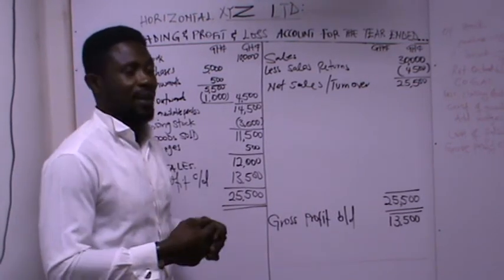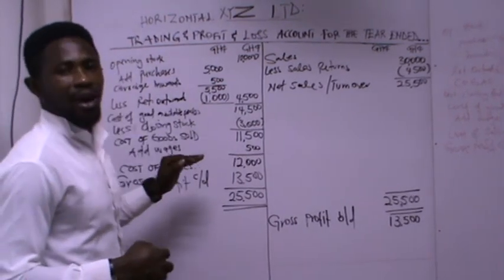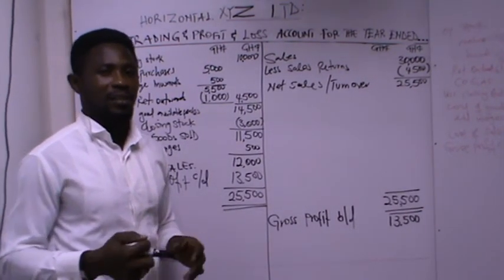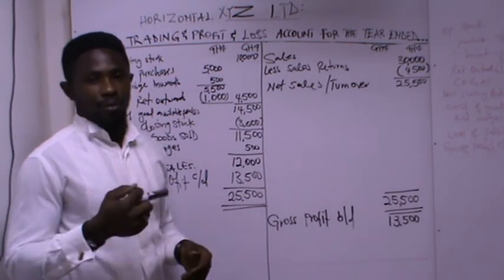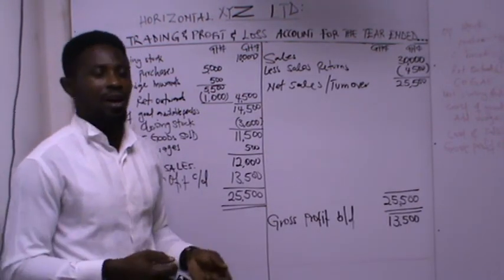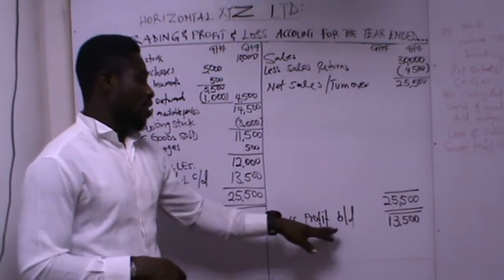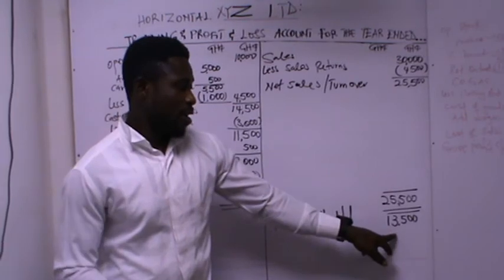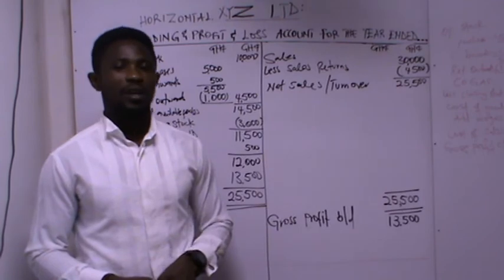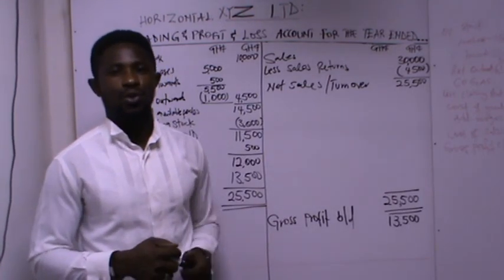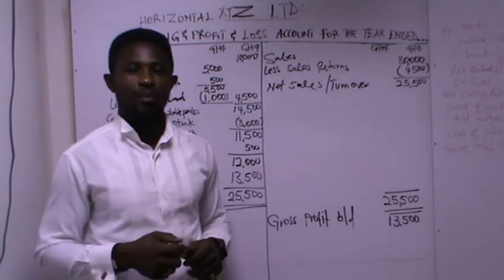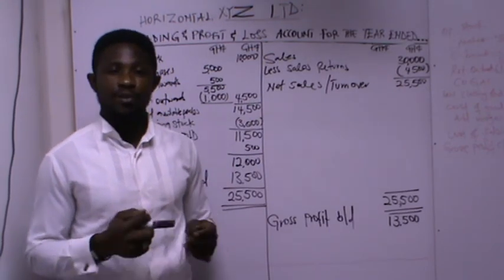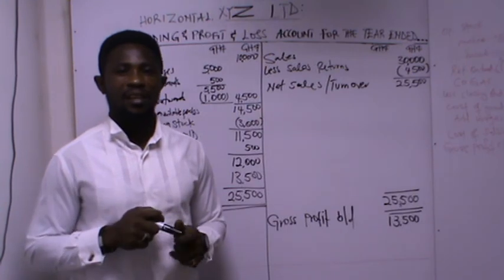We have gross profit brought down of 13,500 Ghana cedis as your income for the profit and loss section. We will list all indirect or overhead expenses against this profit to determine net profit, but for the sake of time we will cover that in our next tutorial. When you meet a question, take your time, read through, pick out the information needed for the trading section, then continue with the profit and loss. Please subscribe so you don't miss out, leave comments with any questions, and stay blessed.